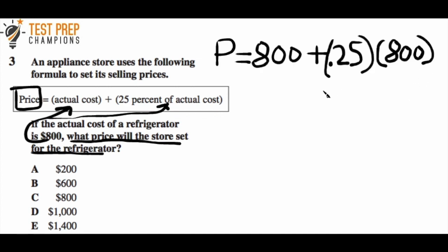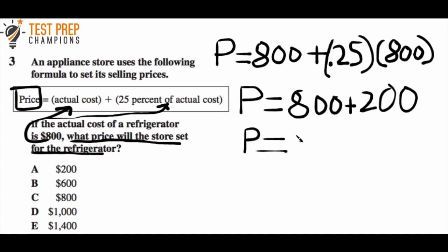When I rewrite the formula, 25% becomes 0.25. Now we do the math. We do multiplication first before addition. So 0.25 times 800 gives us 200. Then 800 plus 200 gives us 1,000. Answer D is correct.